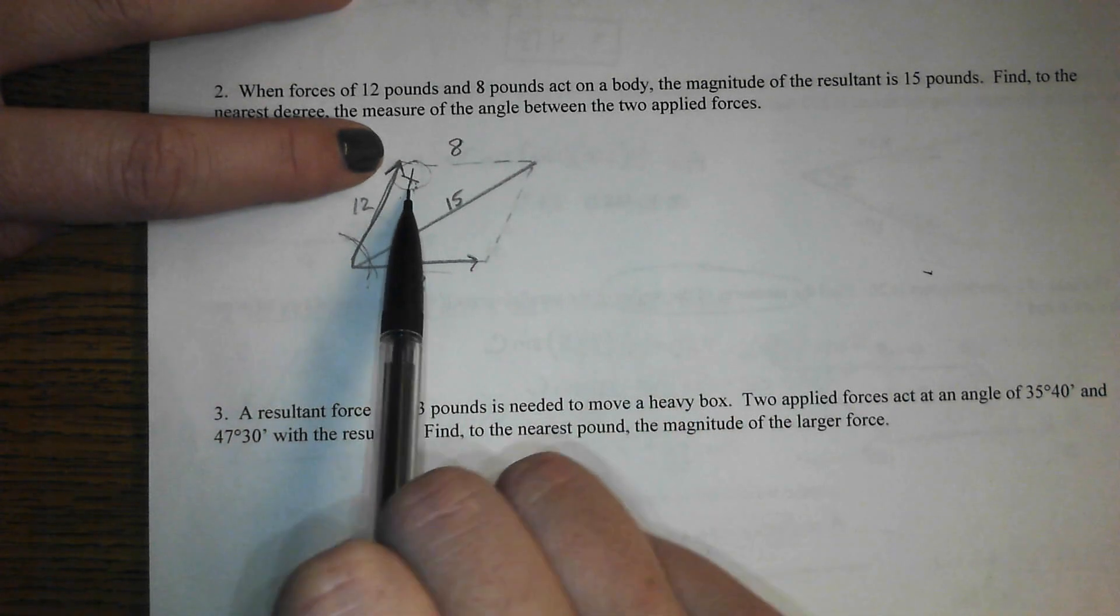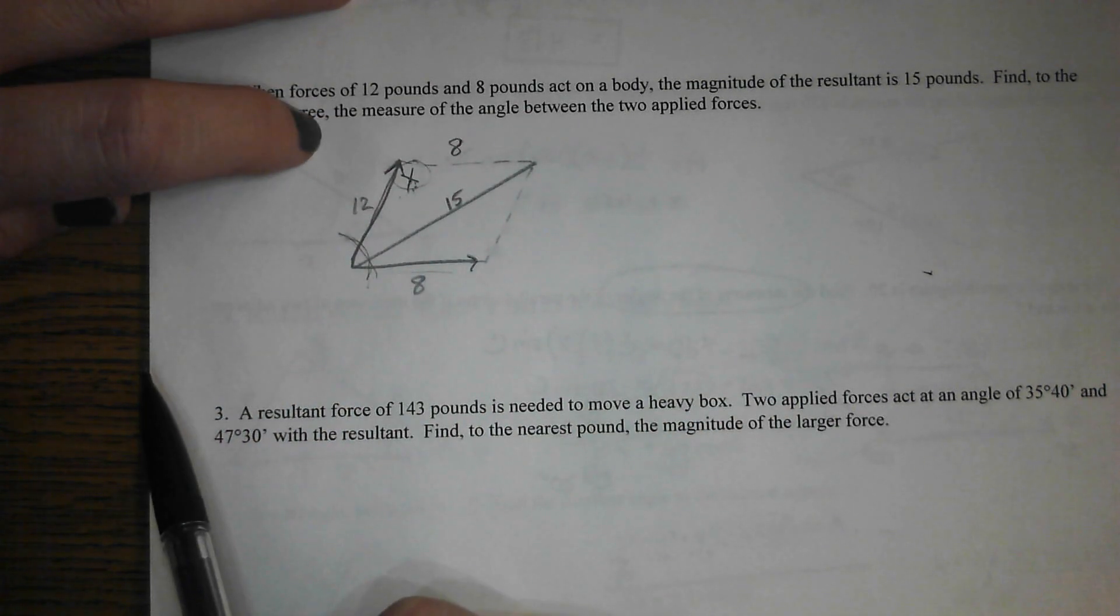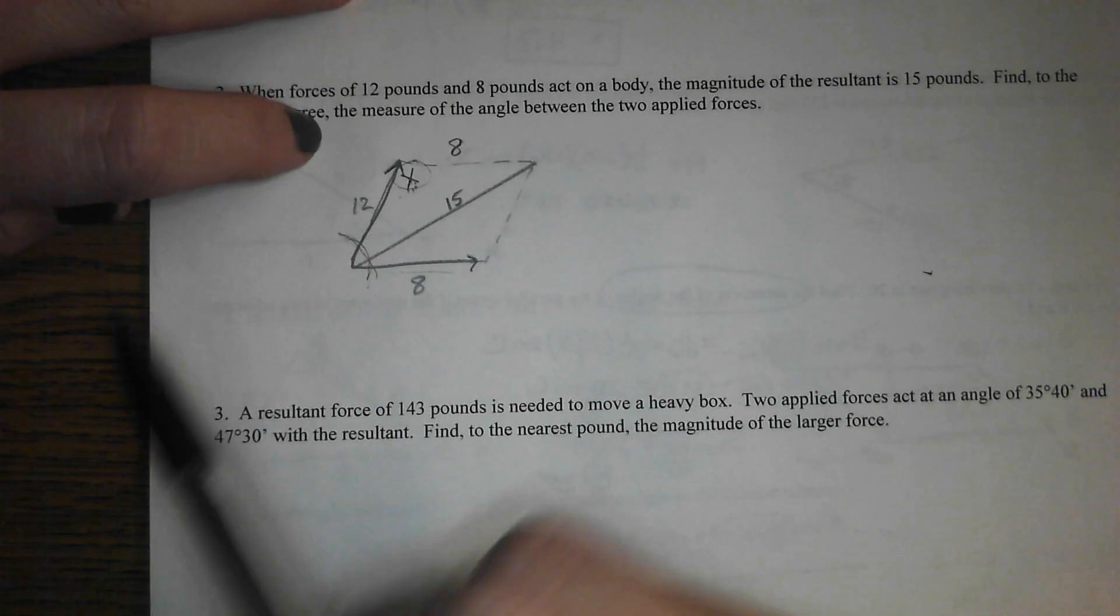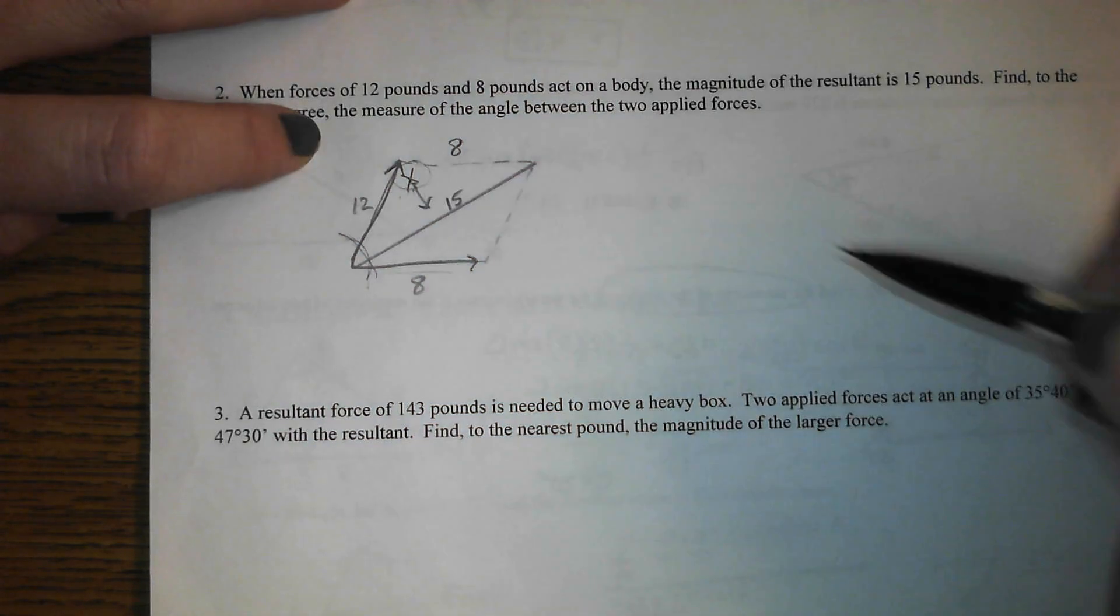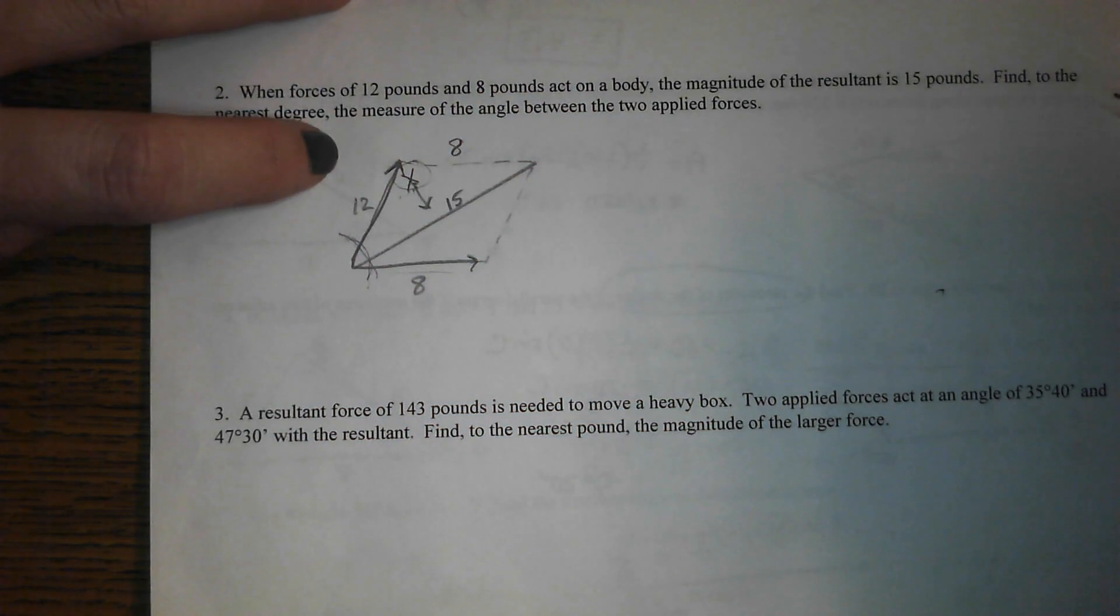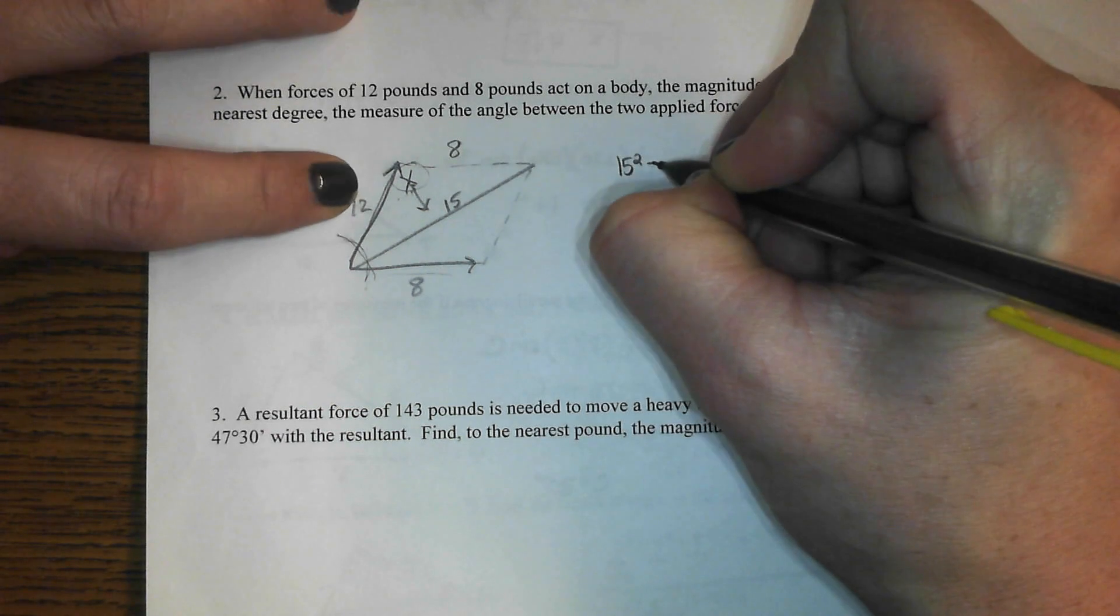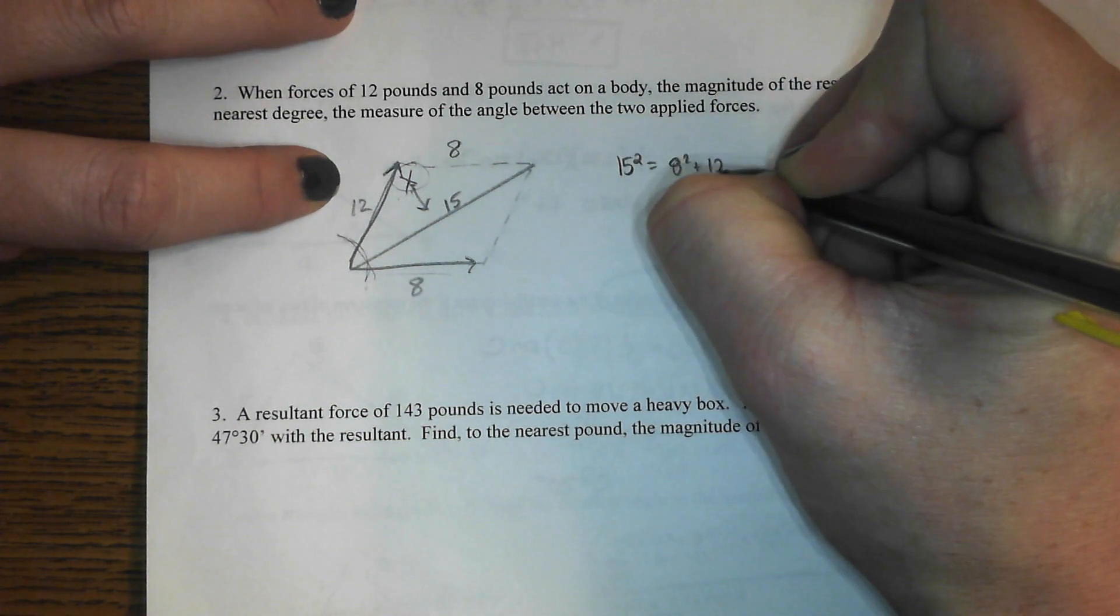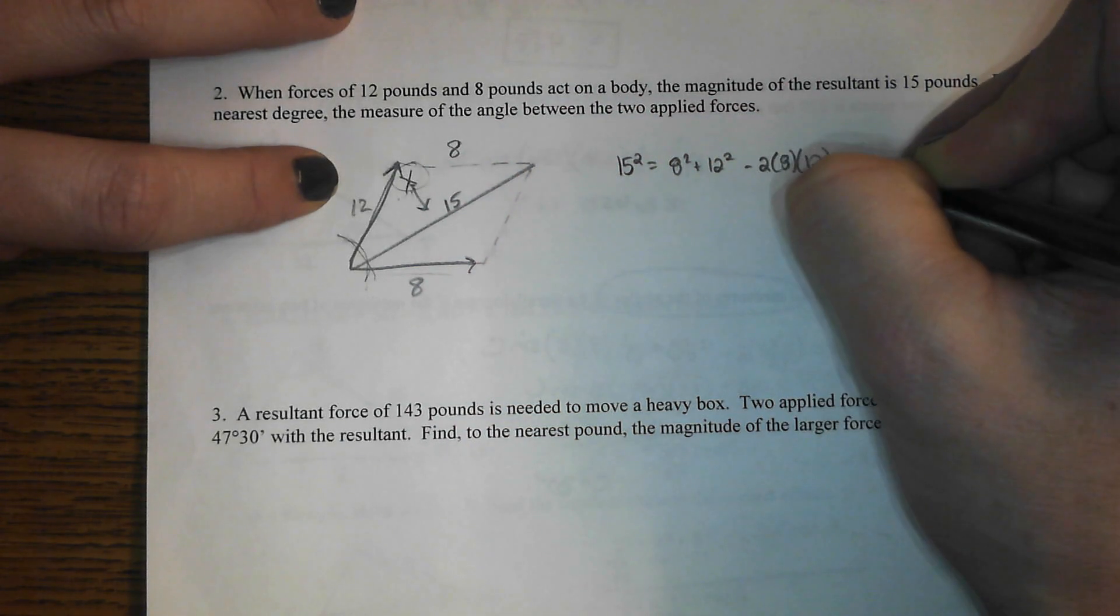What's the side across from x? How long is the side in the triangle across from x? Here's the angle. I'm going to go across from it. What's the length of that side? What'd you say? I think you said it. 15. So that's the one that stands by itself. 15 squared equals 8 squared plus 12 squared minus 2 times 8 times 12 cosine x.